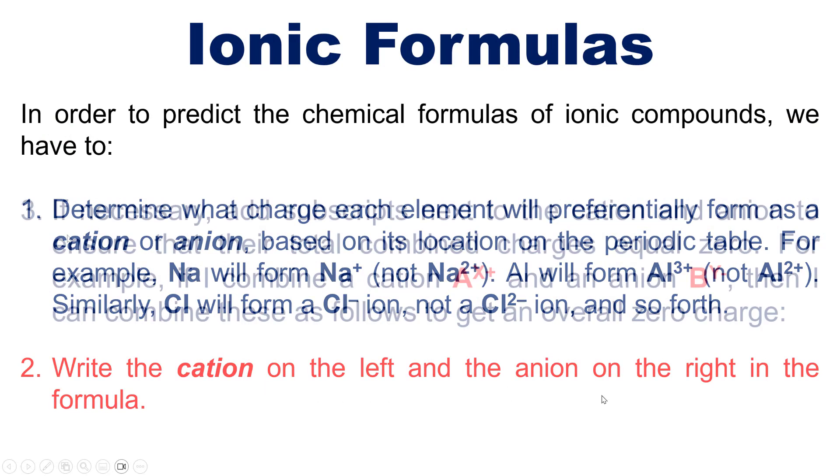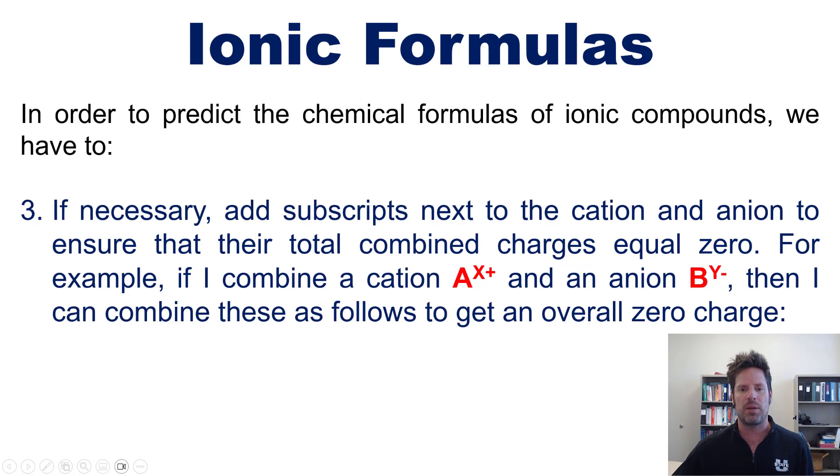We then write the cation on the left and the anion on the right in our formula. Then if necessary, we add subscripts next to the cation and anion in order to ensure that their total combined charges equal zero. For example, if I combine a cation that has a charge of x+ with an anion that has a charge of y-, then I do it in the following way in order to get an overall zero charge.